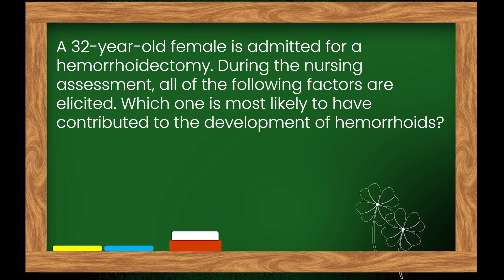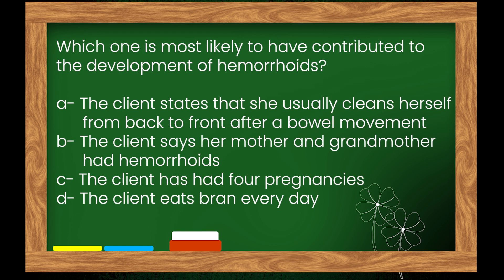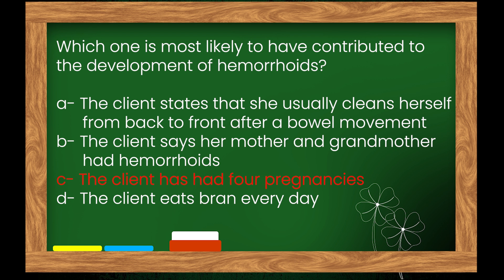Question 12: A 32-year-old female is admitted for a hemorrhoidectomy. During nursing assessment, which factor is most likely to have contributed to the development of hemorrhoids? Options: A. The client cleans herself from back to front after a bowel movement, B. The client's mother and grandmother had hemorrhoids, C. The client has had four pregnancies, D. The client eats bran every day. The right answer is option C: the client has had four pregnancies.